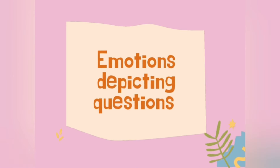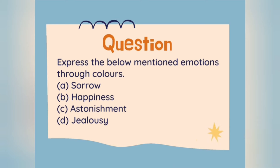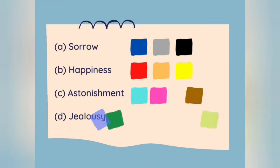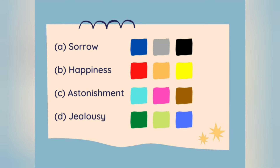Our first type of question is emotions-depicting questions. Questions are framed in this manner: 'Express the below-mentioned emotions through colors — sorrow, happiness, astonishment, and jealousy.' You will be given either checkbox bricks or hexagonal bricks, and you have to choose three most appropriate colors based on color psychology.